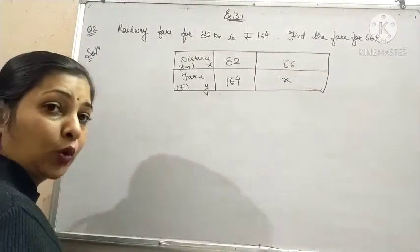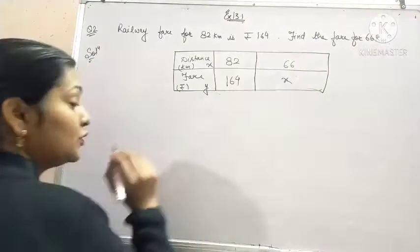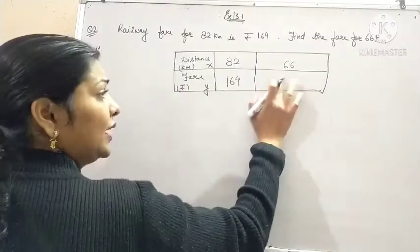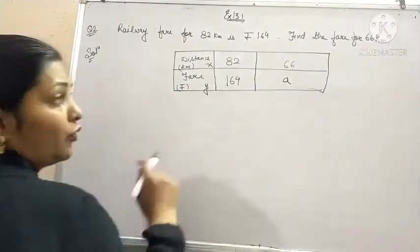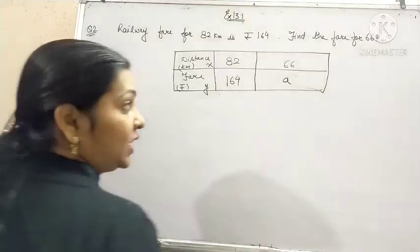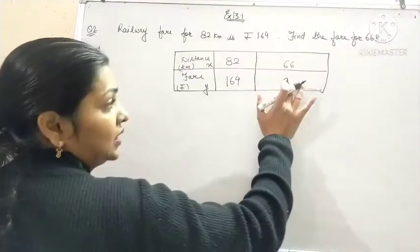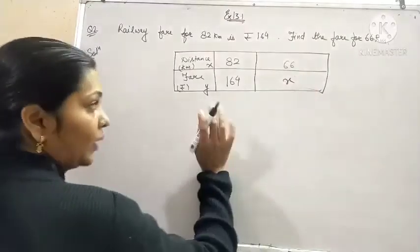We have taken the unknown quantity as x. Now see, or you can write a over here if you want that there should not be any confusion. You can take a. Otherwise x is also ok.